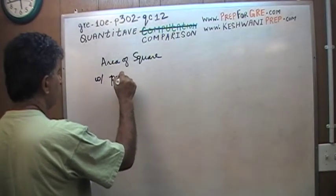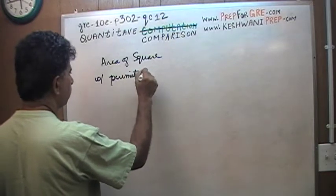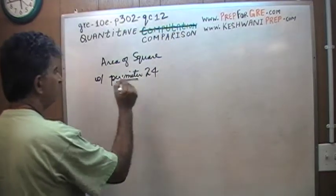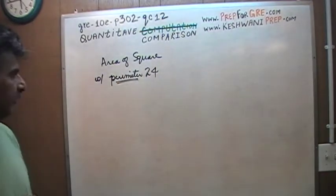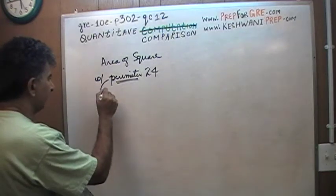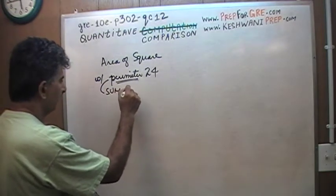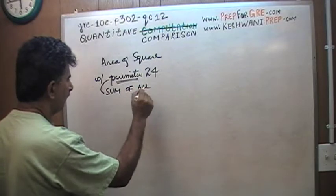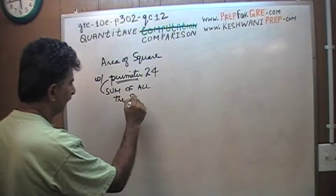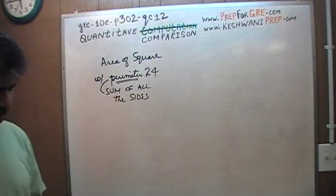What does perimeter mean? Perimeter simply means sum of all the sides.